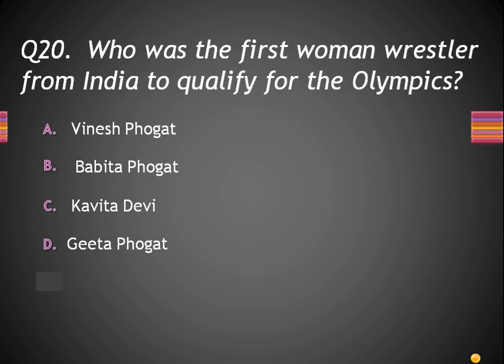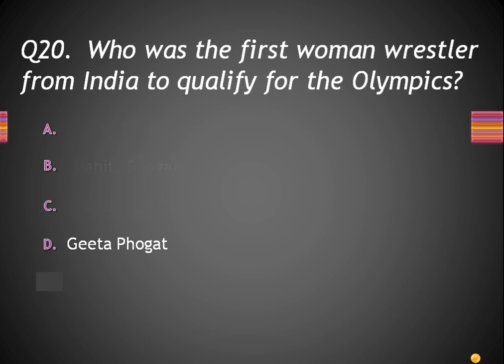The last question: Who was the first woman wrestler from India to qualify for the Olympics? Options: A, Vinesh Phogat; B, Babita Phogat; C, Kavita Devi; and D, Geeta Phogat. The correct answer is Geeta Phogat. You may have also watched the Dangal movie — she was the first woman to qualify in wrestling for the Olympics.